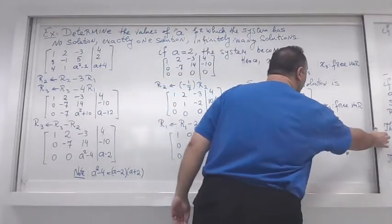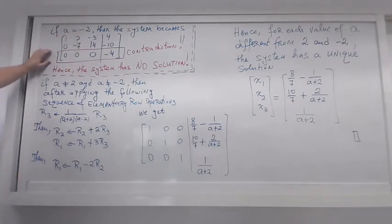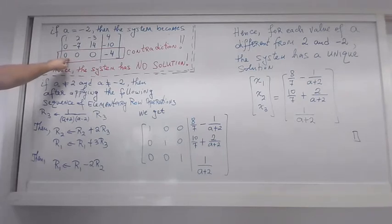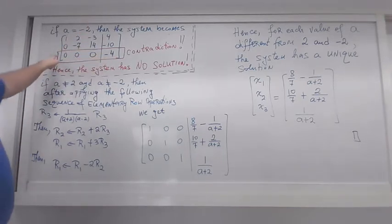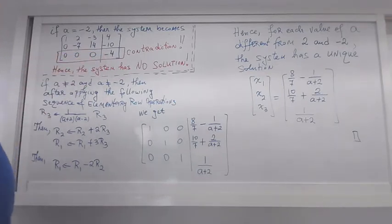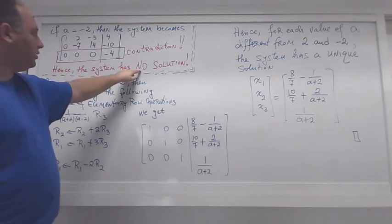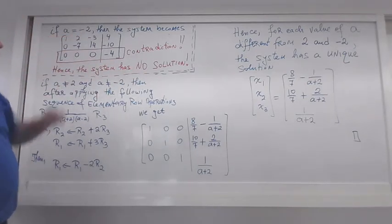Now what happens when a = -2? Substituting, the last row becomes zeros on the left but -4 on the right side. This is a contradiction — it says 0 = -4, which is false. Because of this contradiction the system has no solutions when a = -2.